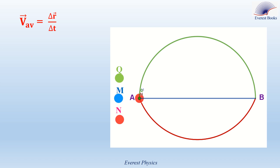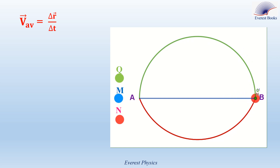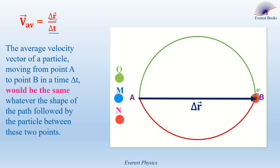Consider three particles M, N, and Q moving from point A to point B on three different paths. As you see, the three particles take the same time to travel from point A to point B. Since they have the same displacement vector, and the average velocity is given by delta R over delta T, the three particles have the same displacement vector and the same time interval delta T, so they have the same average velocity vector. We can conclude that the average velocity vector of a particle moving from A to B in a time delta T is the same whatever the shape of the path followed between these two points.